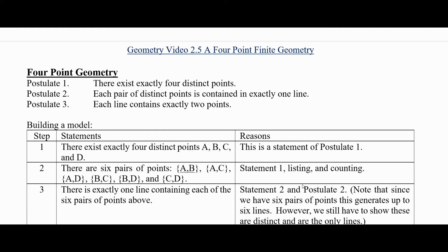In fact that's postulate 1: There exists exactly four distinct points. Postulate 2 says each pair of distinct points is contained in exactly one line. And postulate 3 says each line contains exactly two points.